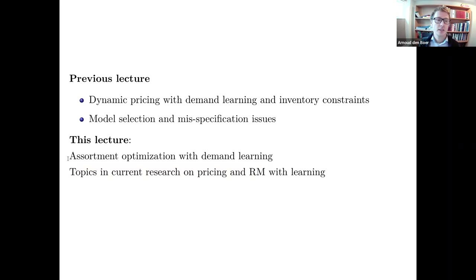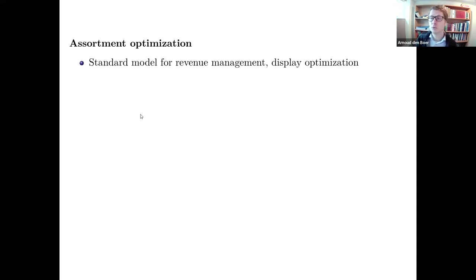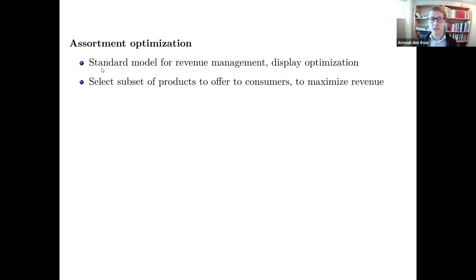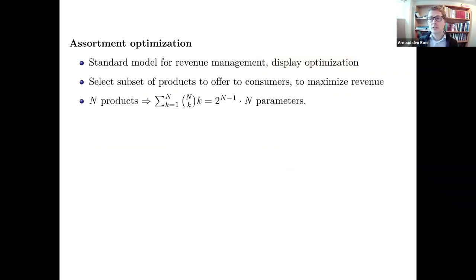Assortment optimization is one of the central problems in revenue management. It consists of determining from a set of products which subset you offer to consumers in order to maximize revenue. This appears in airline revenue management — deciding which fare classes are available — and in shelf optimization for retailers.